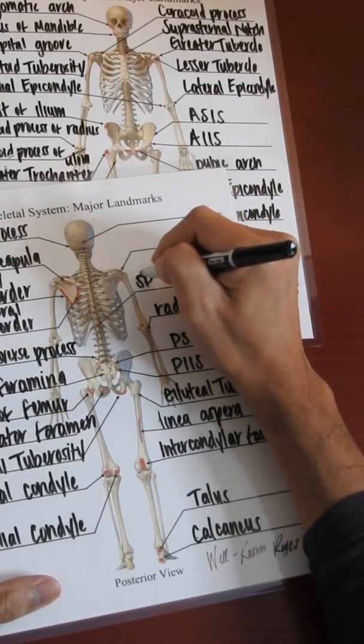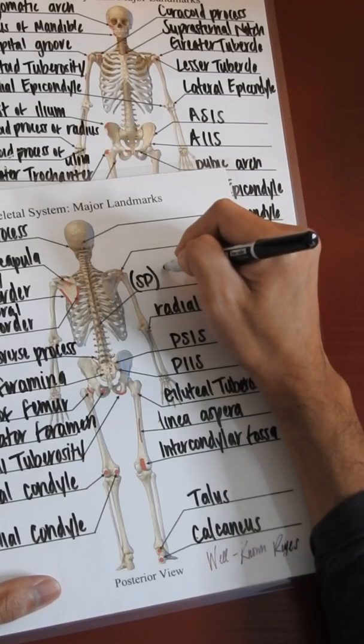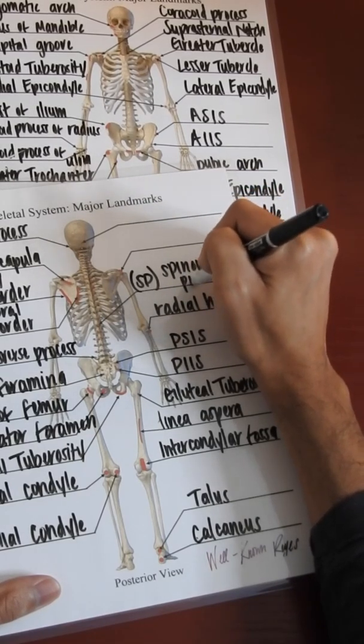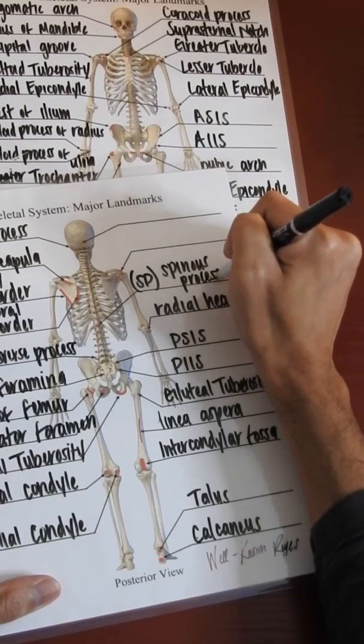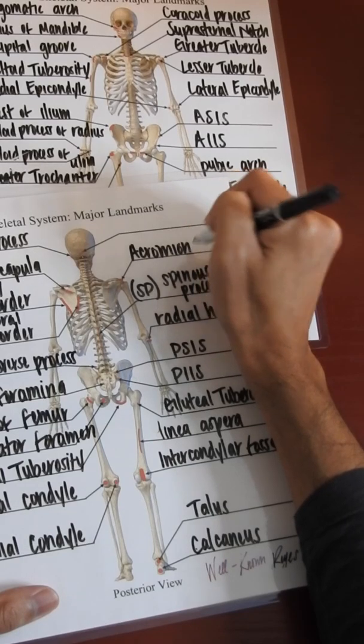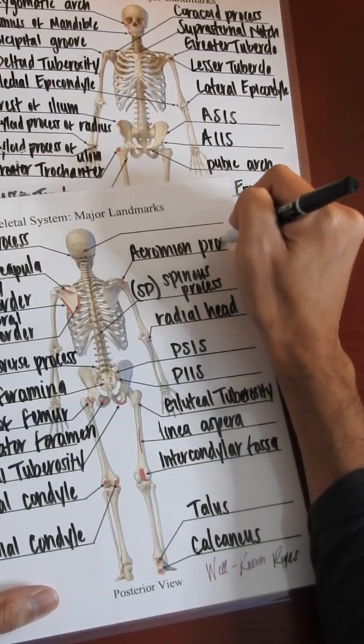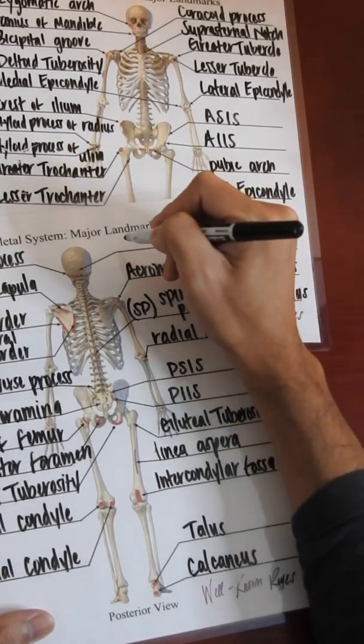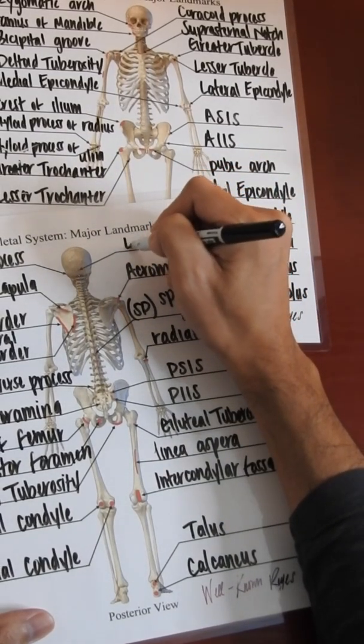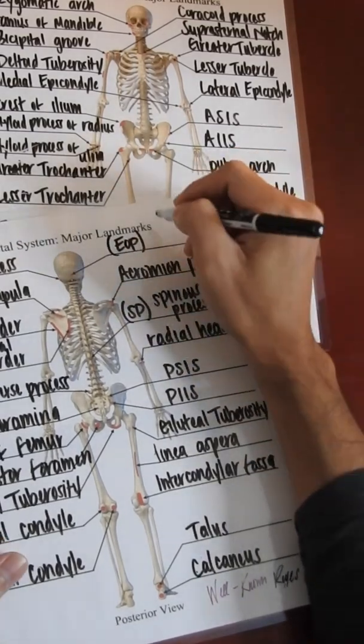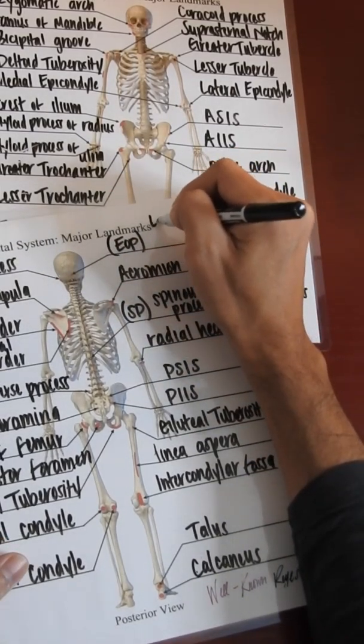SP, known as spinous processes. We have the acromion process, and then we have what's known as the EOP, also known as the external occipital protuberance.